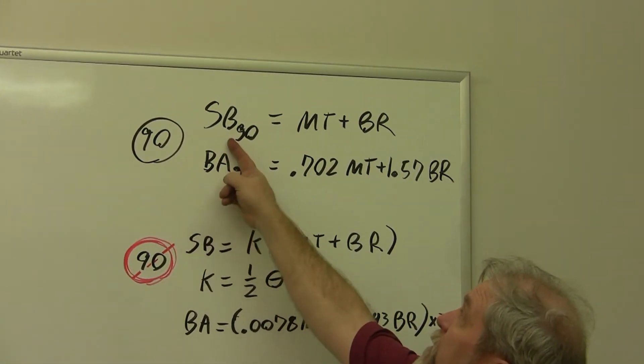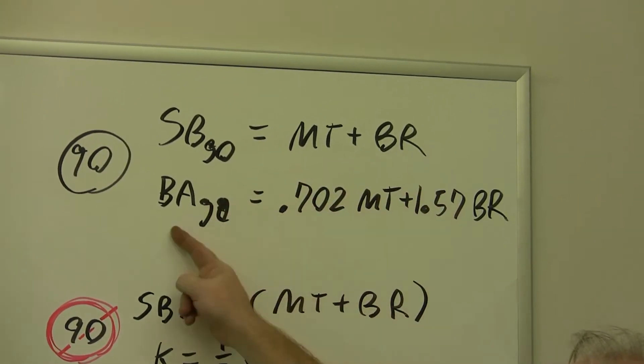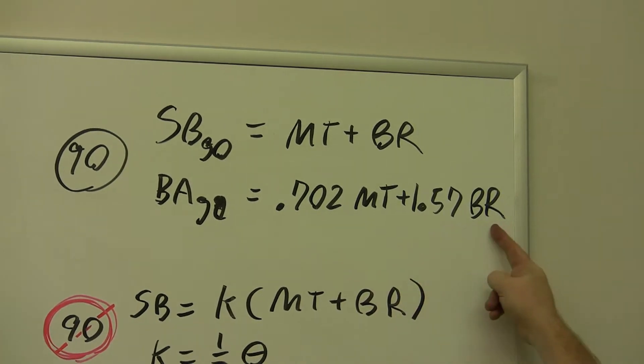We're starting with the 90 degree formulas, which our setback is equal to our material thickness plus bend radius. Our bend allowance for 90 degrees is 0.702 material thickness plus 1.57 bend radius.